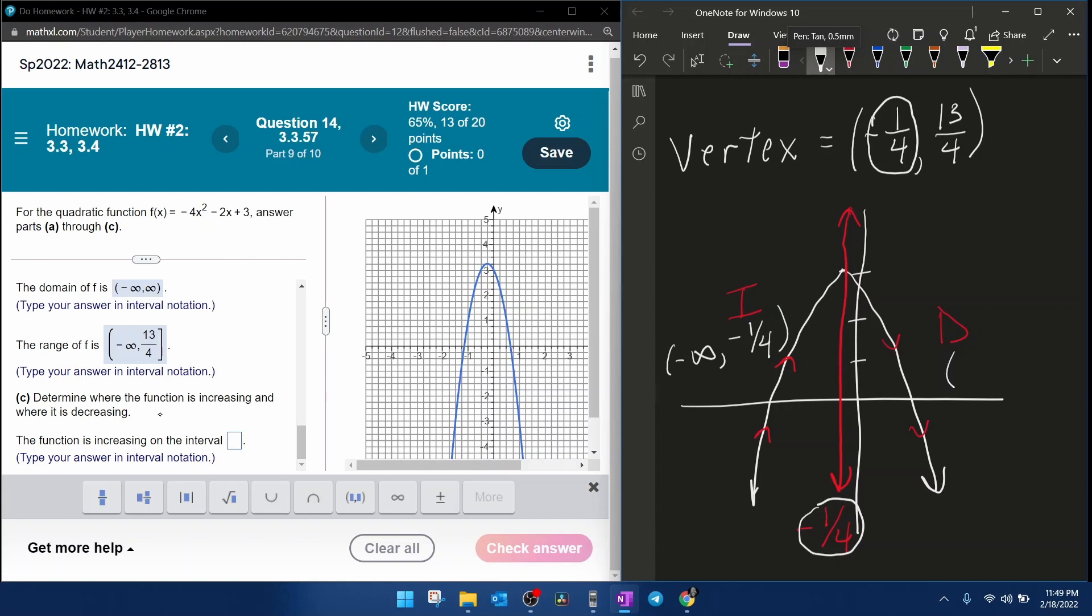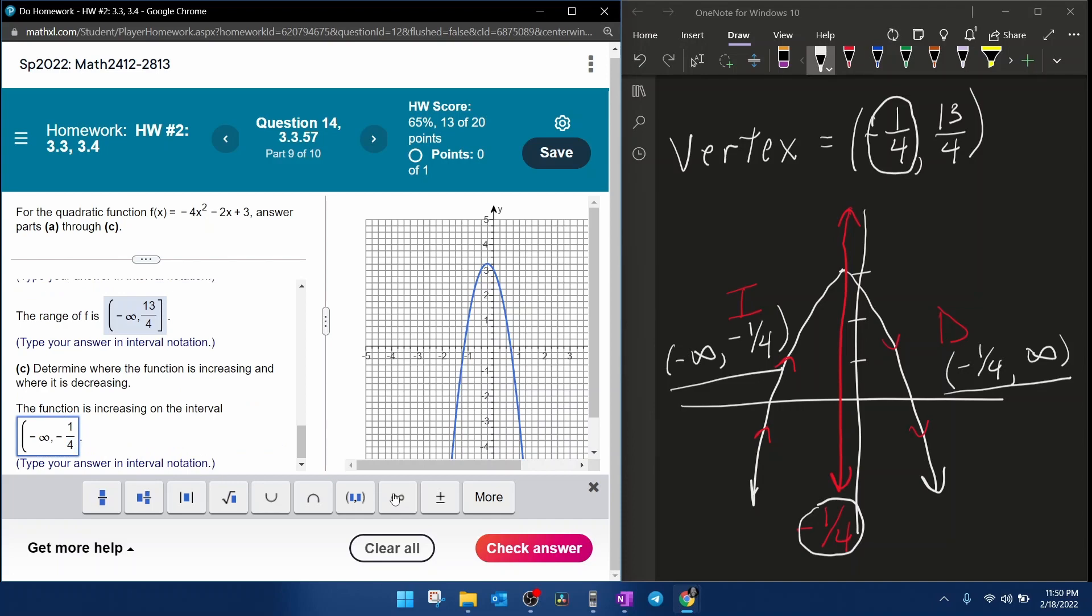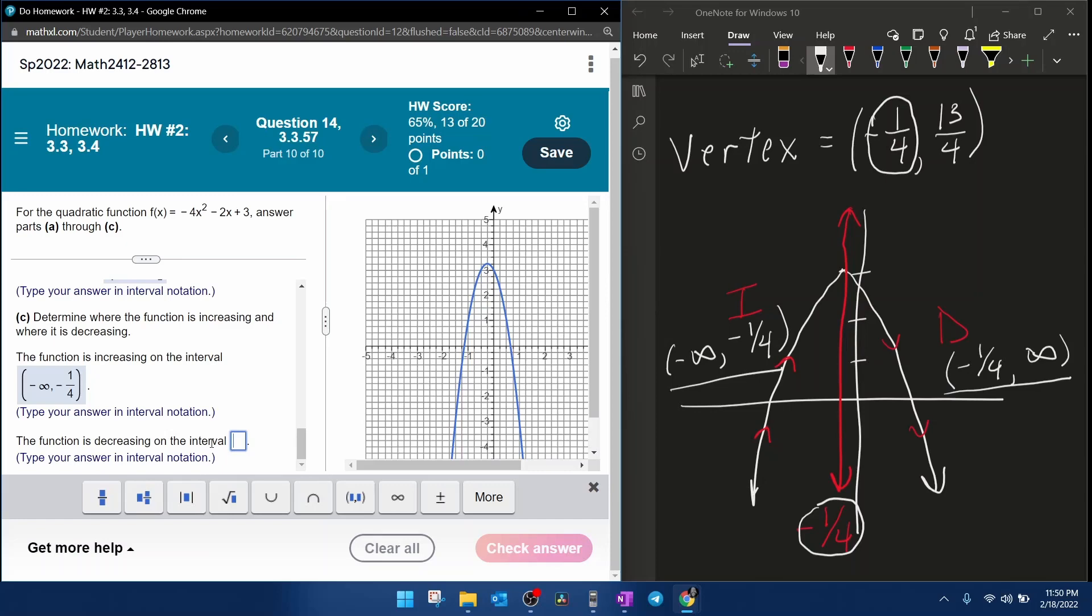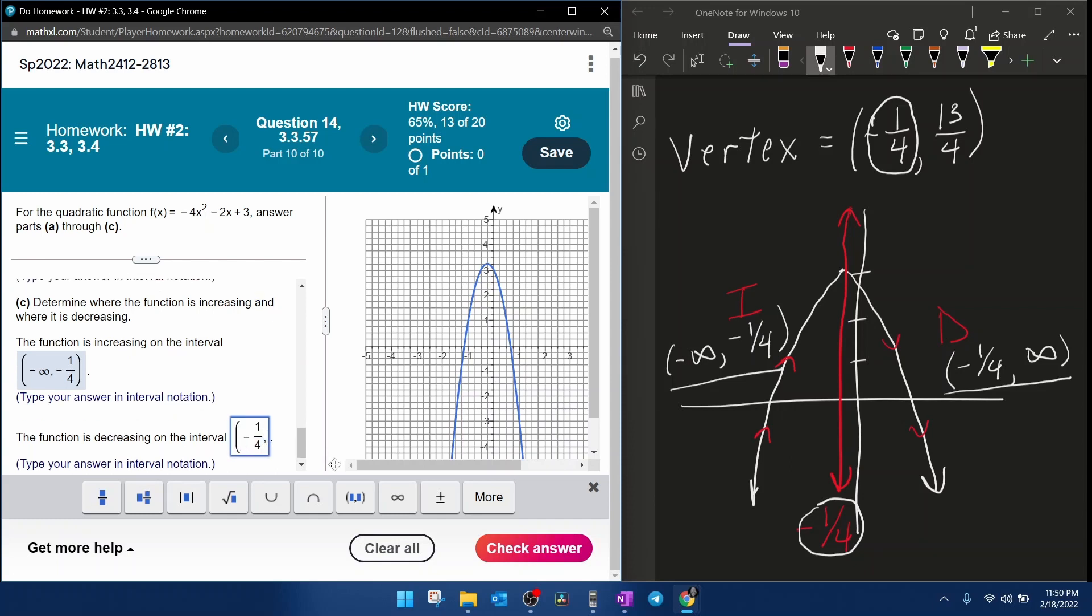And decreasing will start at the x-coordinate of the vertex, and it will continue to decrease forever. Remember that your increasing and decreasing intervals don't use brackets. Always use parentheses. Increasing first. That's going to be negative infinity up to negative one-fourth with a parenthesis. And our decreasing parentheses, starting at negative one-fourth to infinity and beyond.